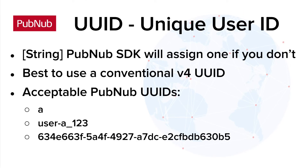UUIDs are unique keys for every PubNum subscriber. They can be set to any string, but it is ideal to use a version 4 universally unique identifier to avoid collisions.